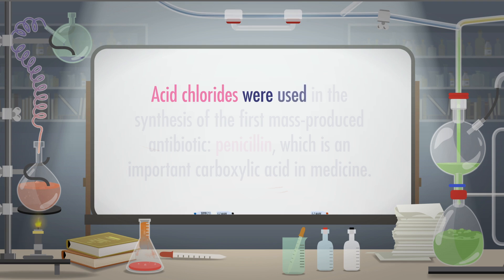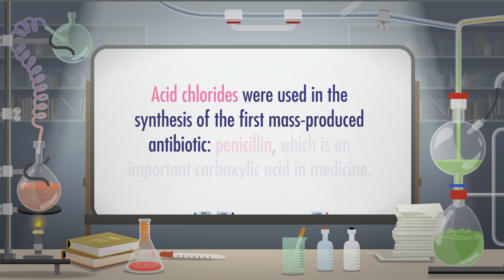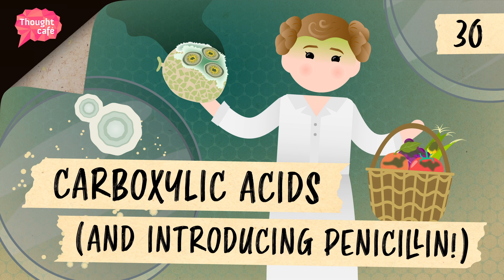Acid chlorides, along with other carboxylic acid derivatives, are involved in many useful reactions in organic chemistry. In fact, acid chlorides were used in the synthesis of the first mass-produced antibiotic, penicillin, which is an important carboxylic acid in medicine. Throughout the rest of the Crash Course Organic Chemistry series, we'll apply many of the reactions we learned to explore the chemical synthesis of penicillin. Let's head to the Thought Bubble to learn more!